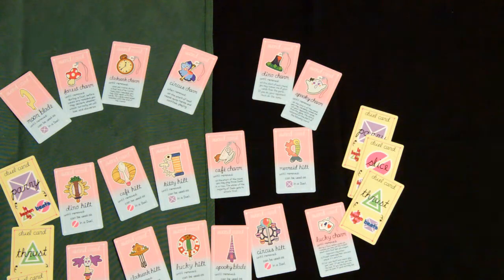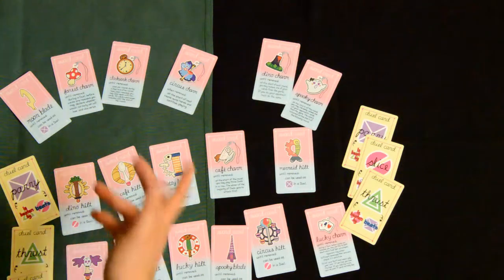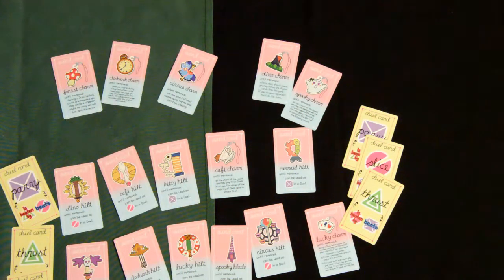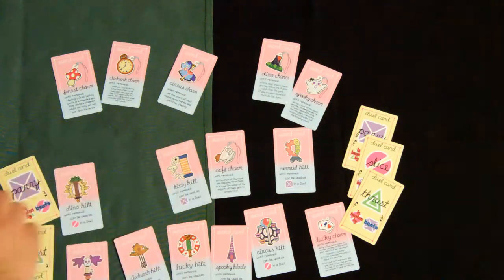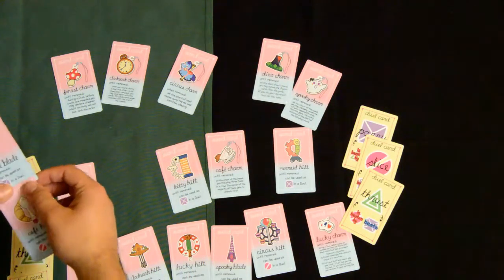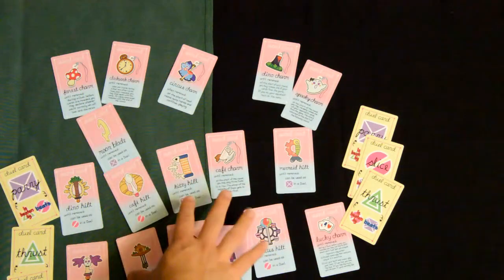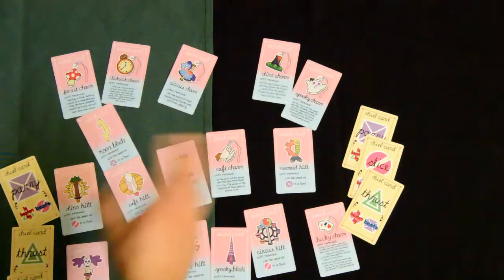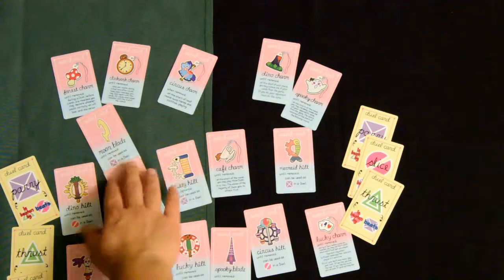A tiny sword. So I'm going to go ahead and choose the moon blade with the cafe hilt. Now they all do have themes, the cafe charm, we go to the cafe hilt, cafe blade, but I like to mix and match. You can do that.